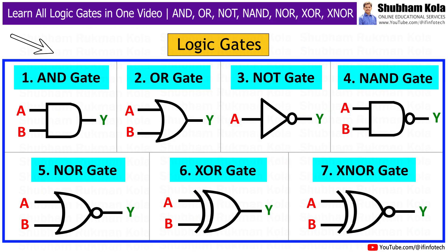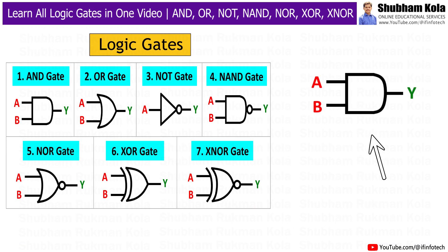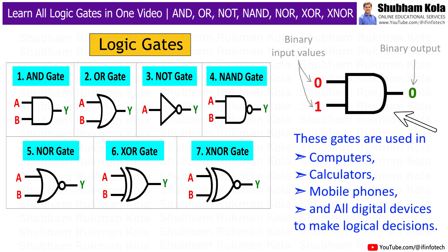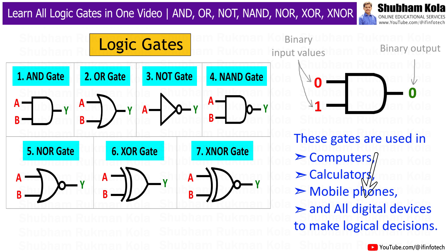Hello everyone. In this video, we are going to learn about logic gates. The logic gates are the basic building blocks of digital electronics. They work on binary input values, either 0 or 1, and give a binary output. These gates are used in computers, calculators, mobile phones, and all digital devices to make logical decisions.